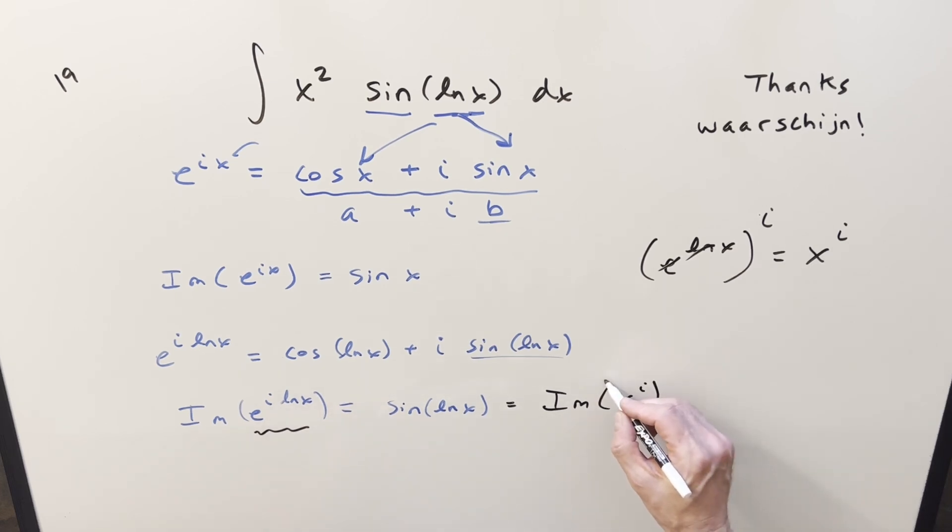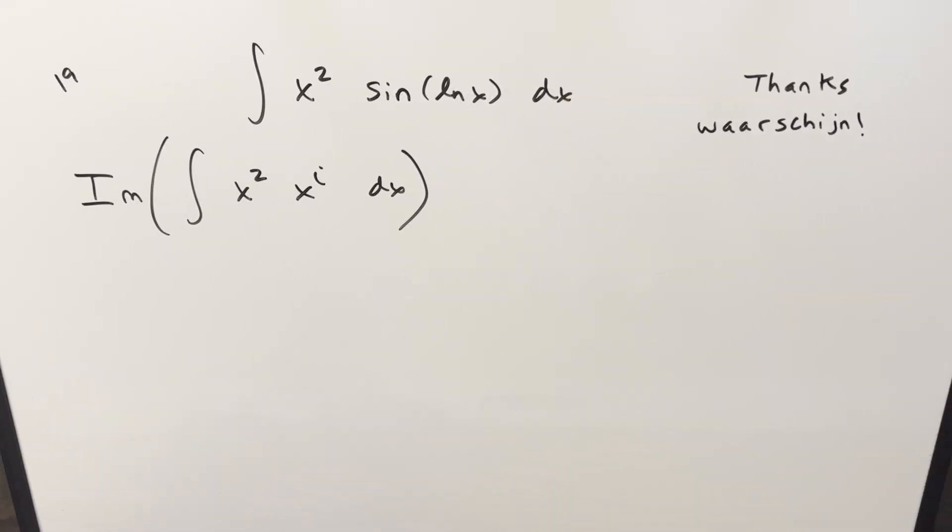So in order to do this, let's just take this and we'll throw it back into our integral, and let's see what we have. Okay, so now we'll go ahead with this integral, and at the end, we're just going to want the imaginary part of the whole thing in order to get back to our solution. Now, the reason this works out so nice is we've got the same base, so we can kind of just put these together and write this.